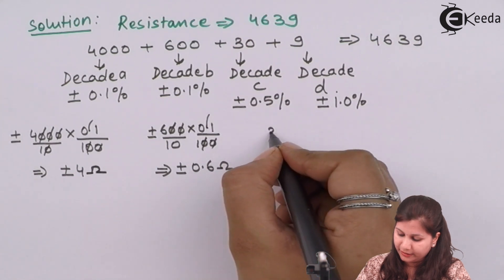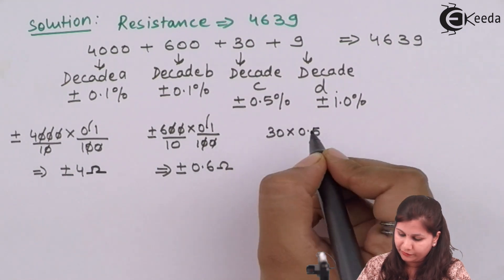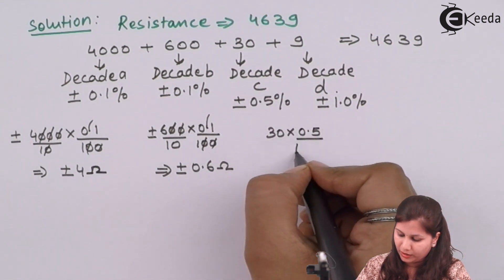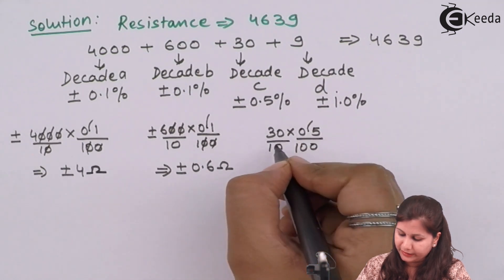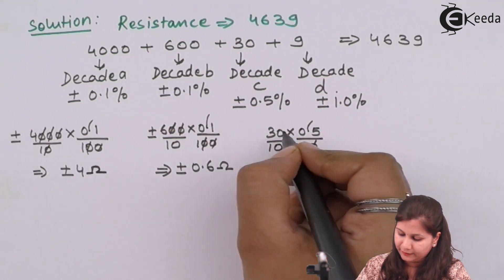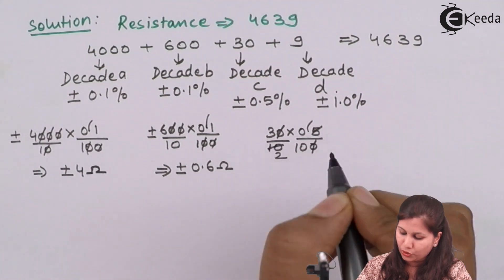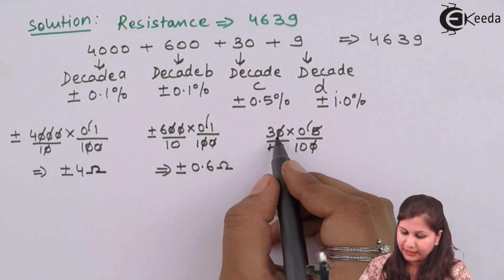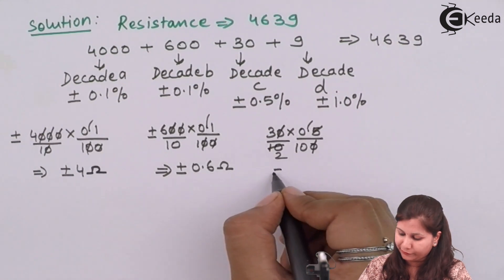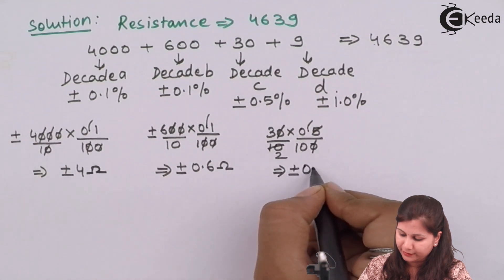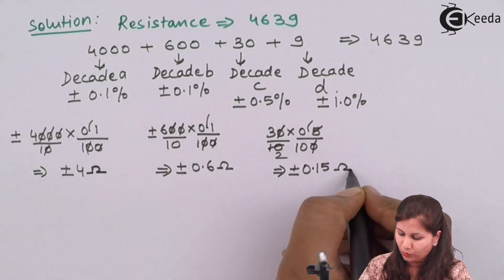For decade C, the reading is 30 and the error is ±0.5%, so: 30 × 0.5/100 = ±0.15 ohms.